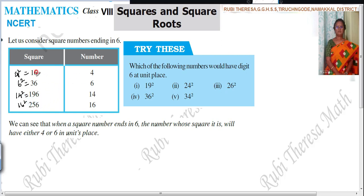So, what are the digits in the unit place? 6. What are the digits? 6 only.